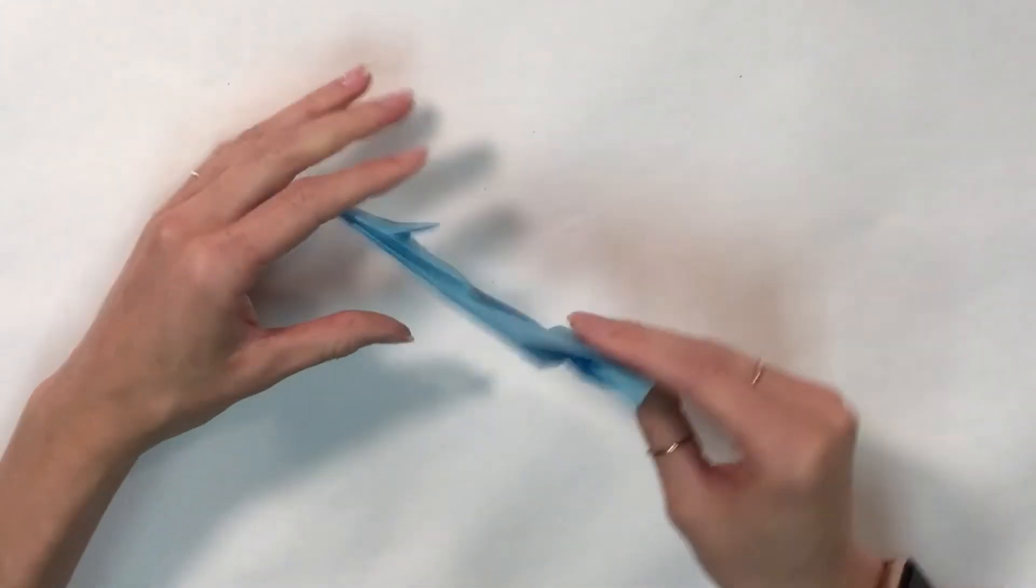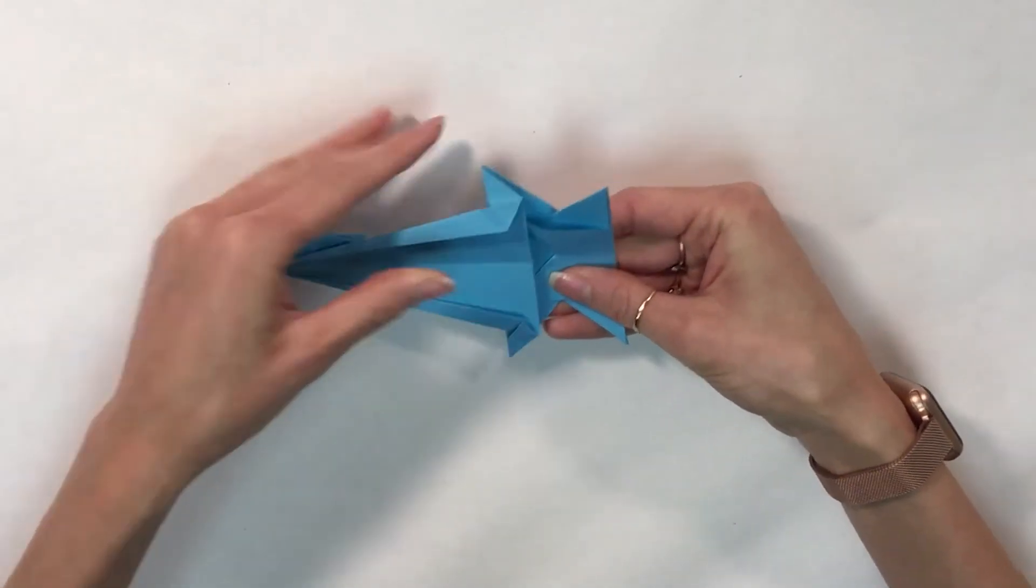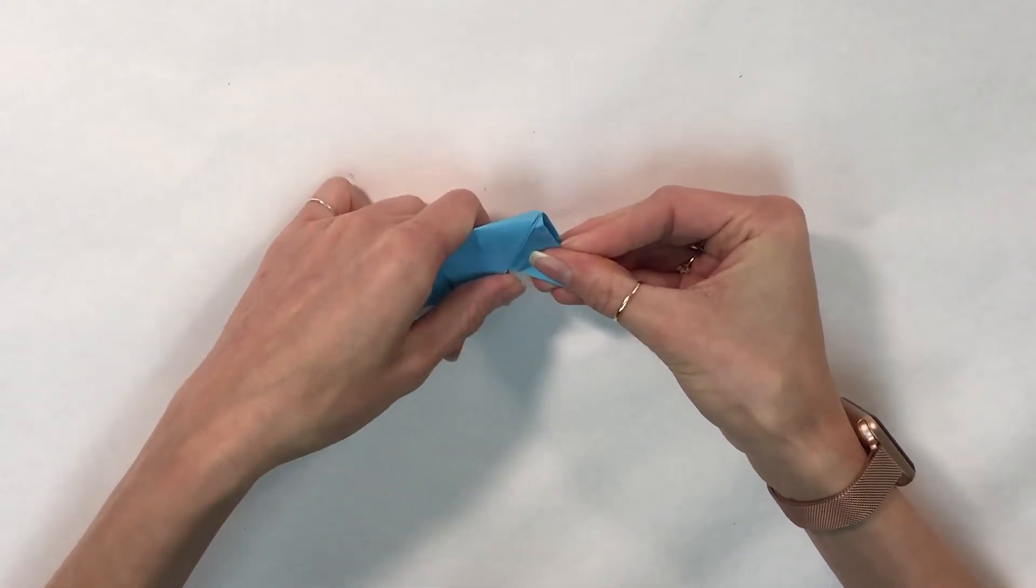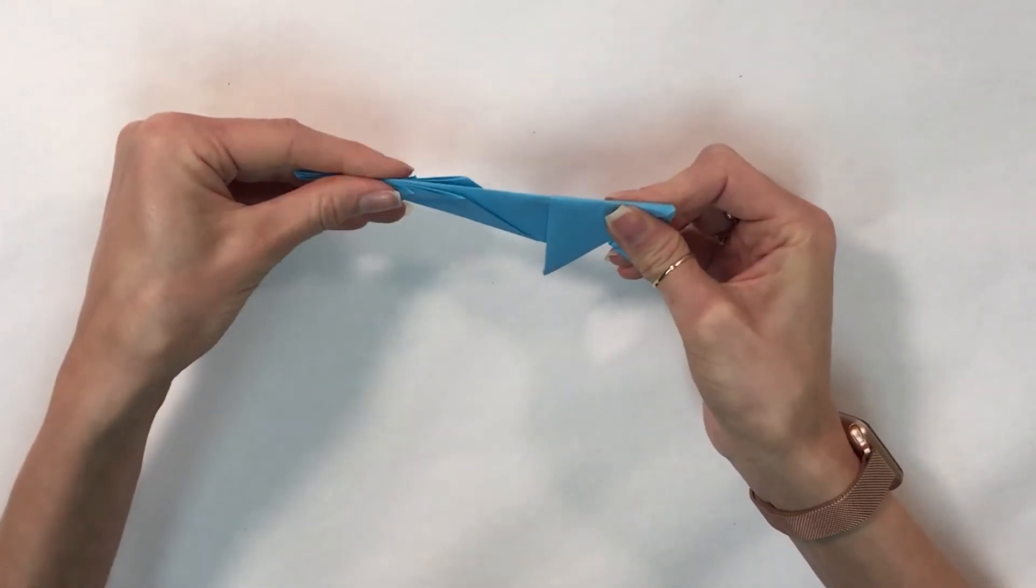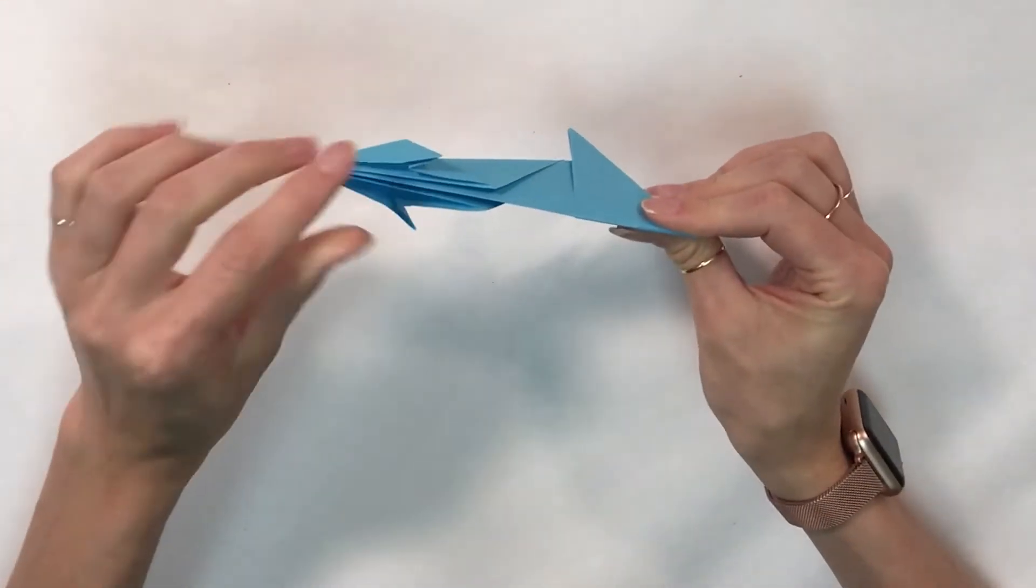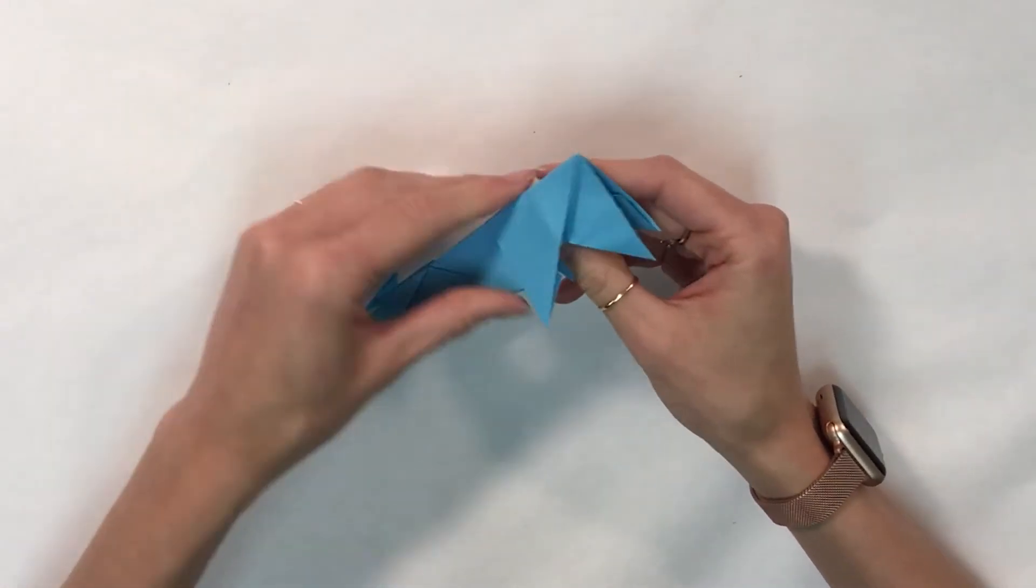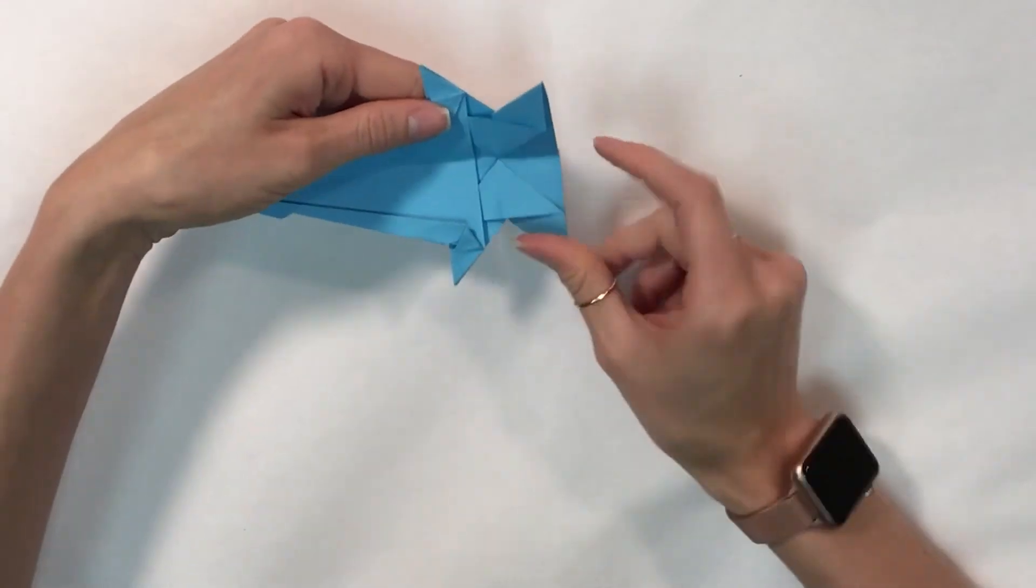Now I'm going to fold the whole thing in half, lining up the legs, lining up my diagonal fold here. And I'm going to open my llama back up.